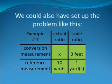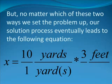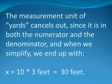Alternately, we could also set up the problem like this. You always have your choice as to whether to use rows or columns for the characteristics compared. Although, in my experience, it seems to work better if the items name the columns and the characteristics name the rows. But either way will work fine. Note that, in this case, we are calling the compared things the scale ratio and the actual ratio. The characteristics being compared are the reference measurement and the desired conversion measurement. But no matter which of these two ways we set the problem up, our solution process eventually leads to the following equation: X is equal to ten yards times three feet divided by one yard. The measurement unit of yards cancels out since it is both in the numerator and the denominator. And when we simplify, we end up with X equals ten times three feet is equal to thirty feet. Clearly, we should go back and check this, but for now we'll overlook that and go on to our next step.